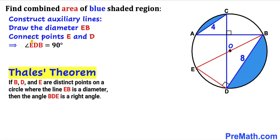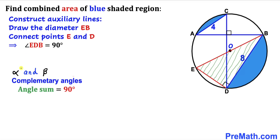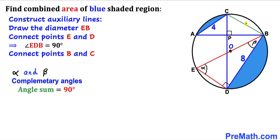Angle EDB turns out to be 90 degrees. Let's assume that alpha and beta are two complementary angles — in other words, alpha plus beta equals 90 degrees. Focusing on triangle EDB, we know this angle is 90 degrees; we call one angle alpha and its complementary angle beta. In the next step we draw chord BC by connecting points B and C.